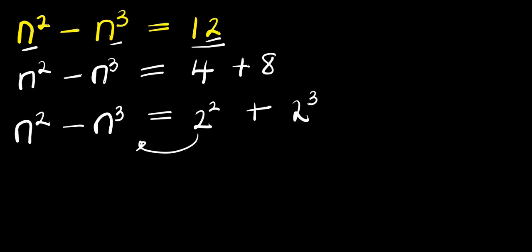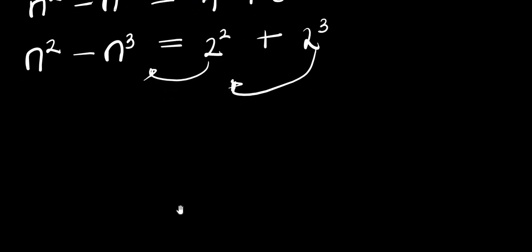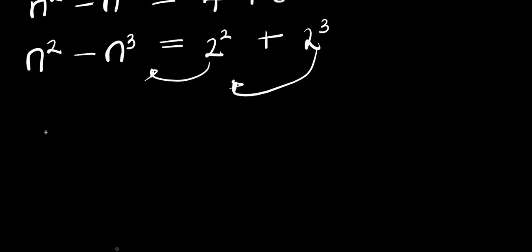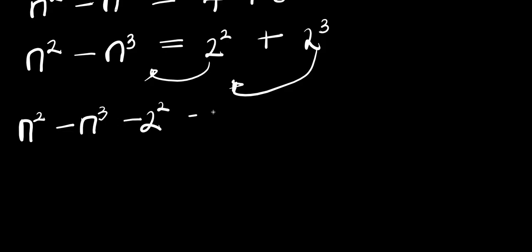I move both sides over. So I can have n² - n³ - 2² - 2³ = 0.